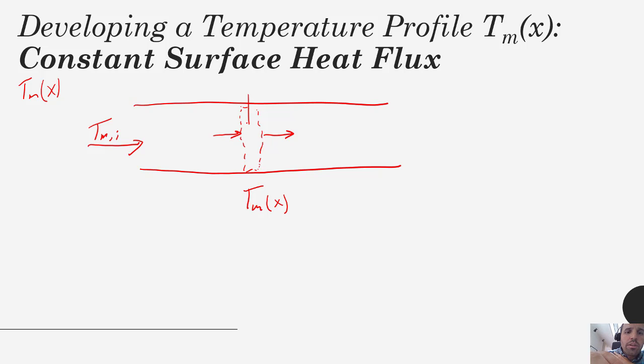Then we'd also have energy coming in via convection, but we could specify that convection is coming in at a constant rate.